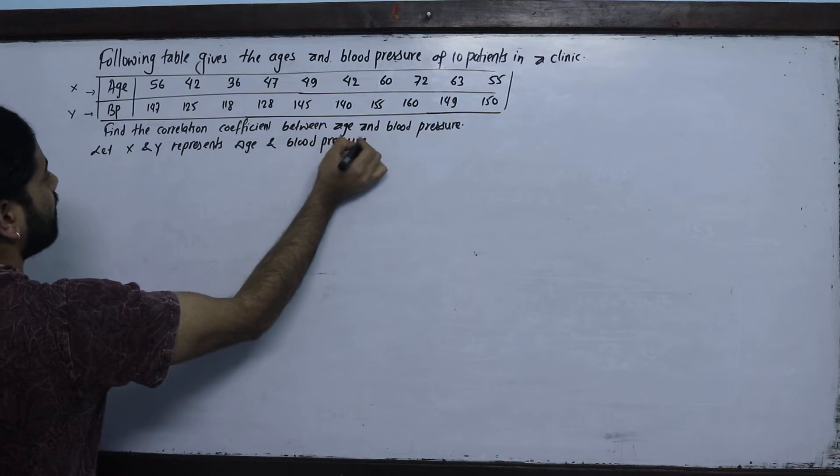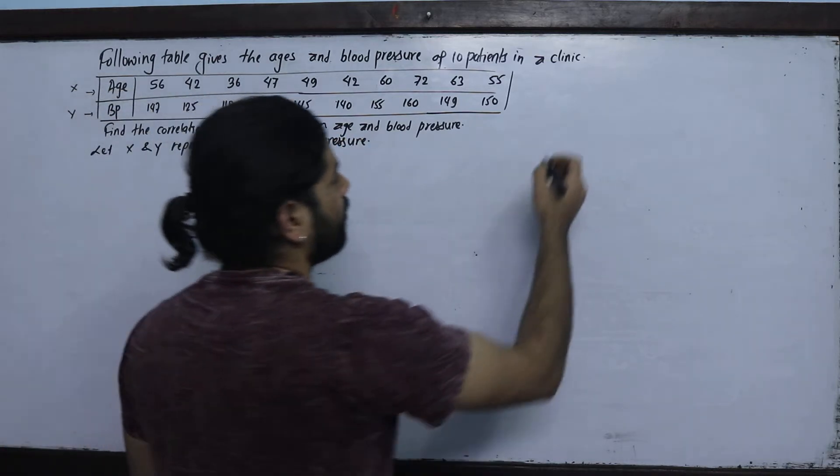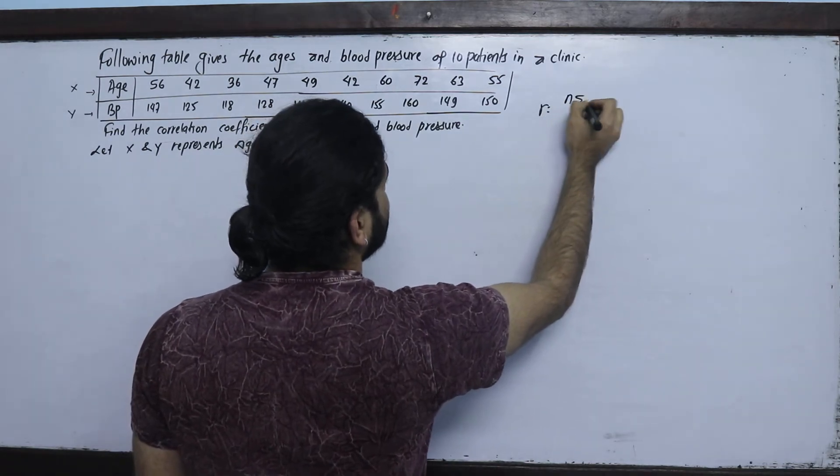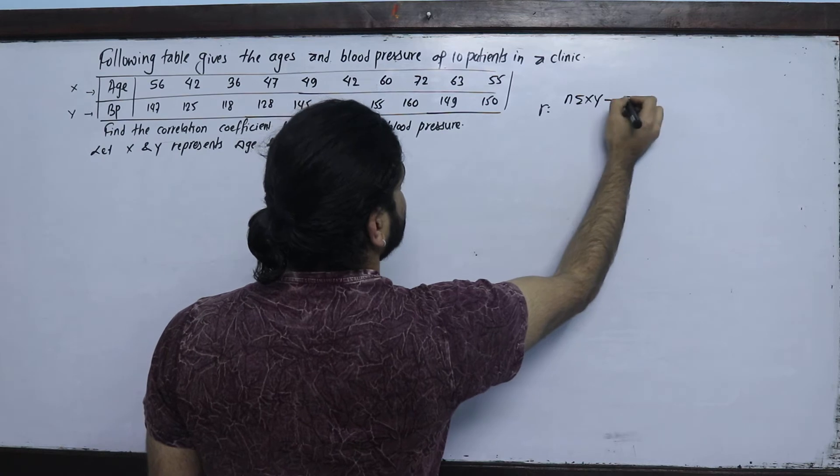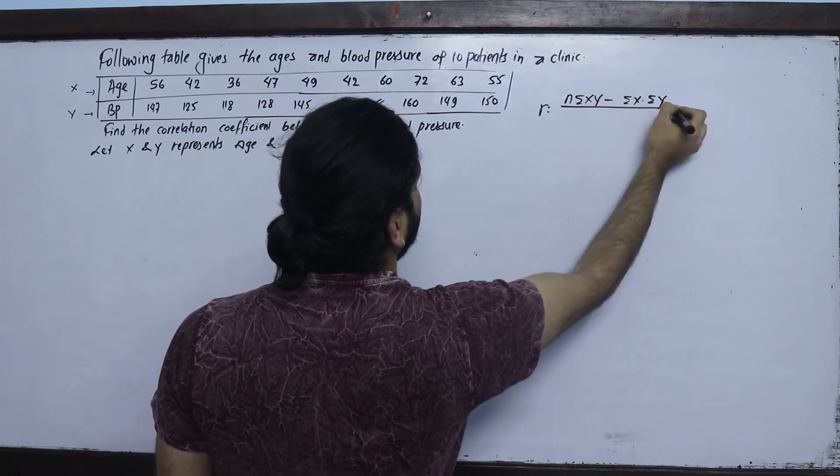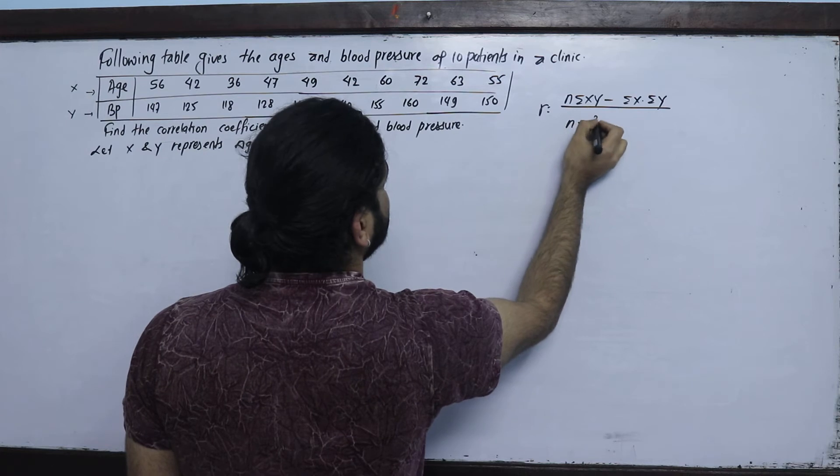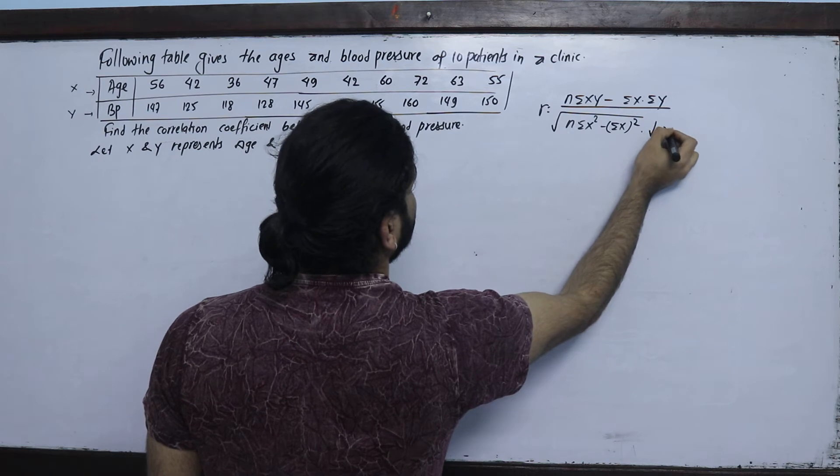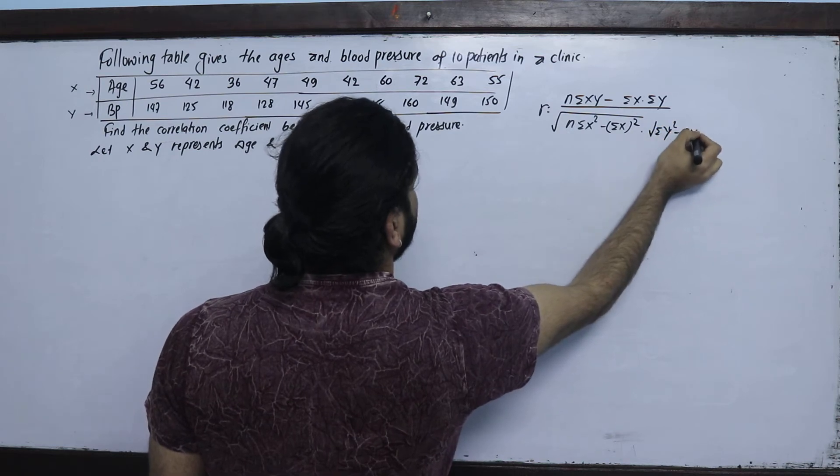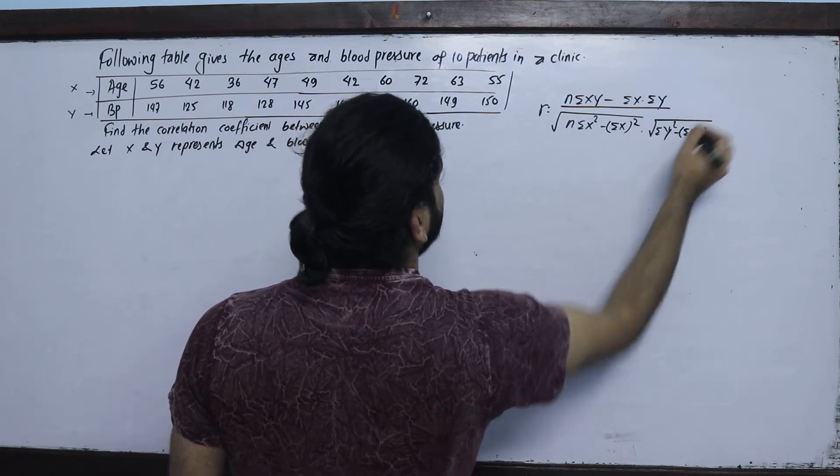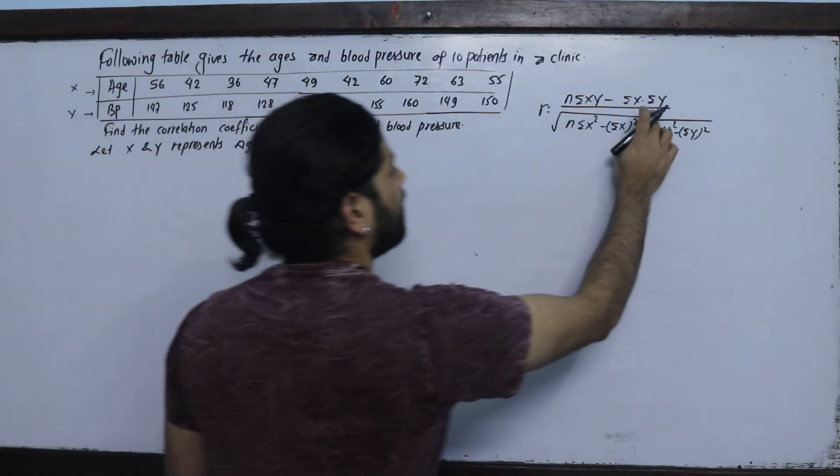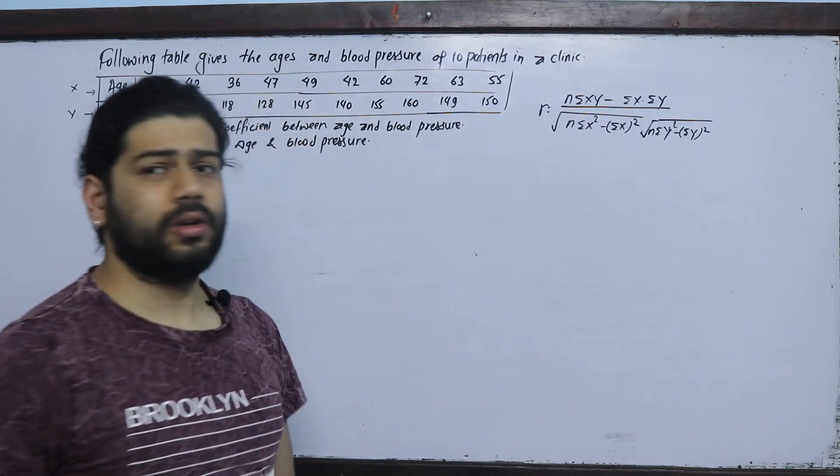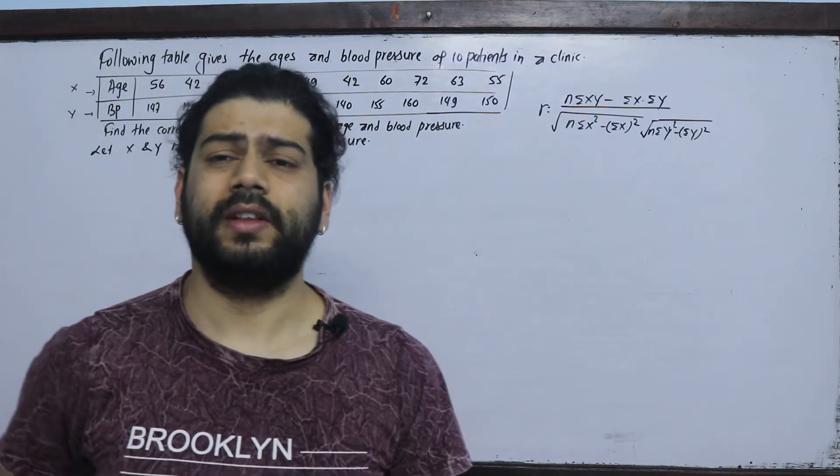In the previous class, we learned the formula: r equals n summation xy minus summation x into summation y, divided by square root of n summation x square minus summation x whole square, into n summation y square minus summation y whole square.